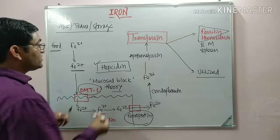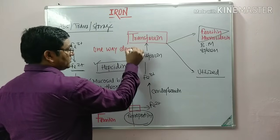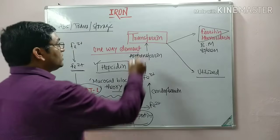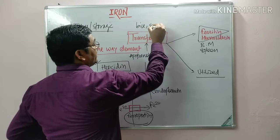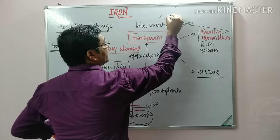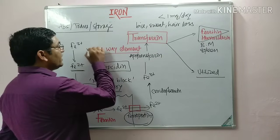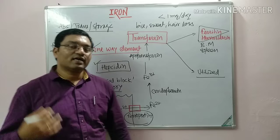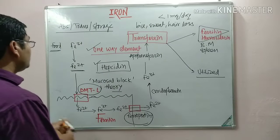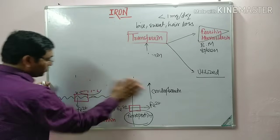Iron is known as a one-way element or substance because there is very little excretion of iron through bile, sweat, and hair loss — less than 1 milligram per day of iron is lost through the body. That is why it is known as a one-way element; it is utilized and reutilized again and again.